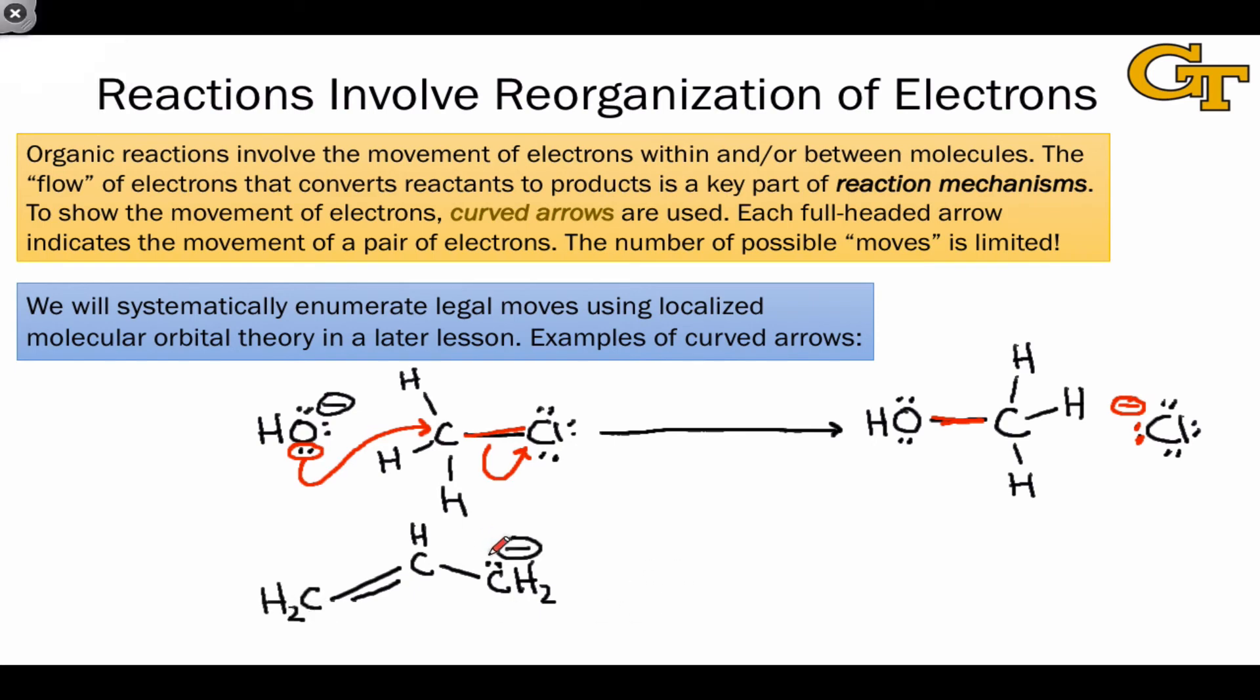I just want to show a little bit about how arrow pushing works in a resonance context. This molecule is allyl anion, and as we'll see in a later video, it has the structural elements required for resonance, specifically a lone pair adjacent to a pi bond. And we can push electrons internally within this molecule, creating a C-C pi bond and breaking the adjacent C-C pi bond, forming a new lone pair on the carbon atom in the opposite end of the molecule to create a resonance structure of what we started with.